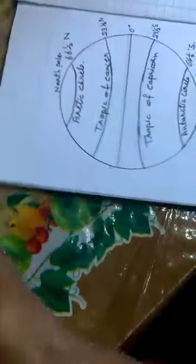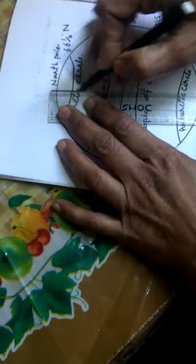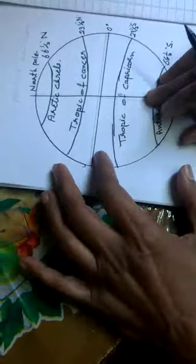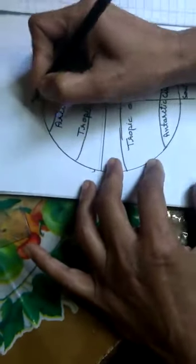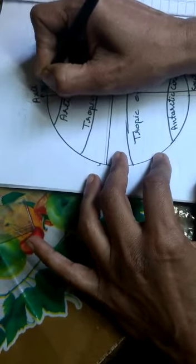These all are imaginary lines. An imaginary line that passes from the center of the earth and the earth rotates on it is called axis. This is an axis.